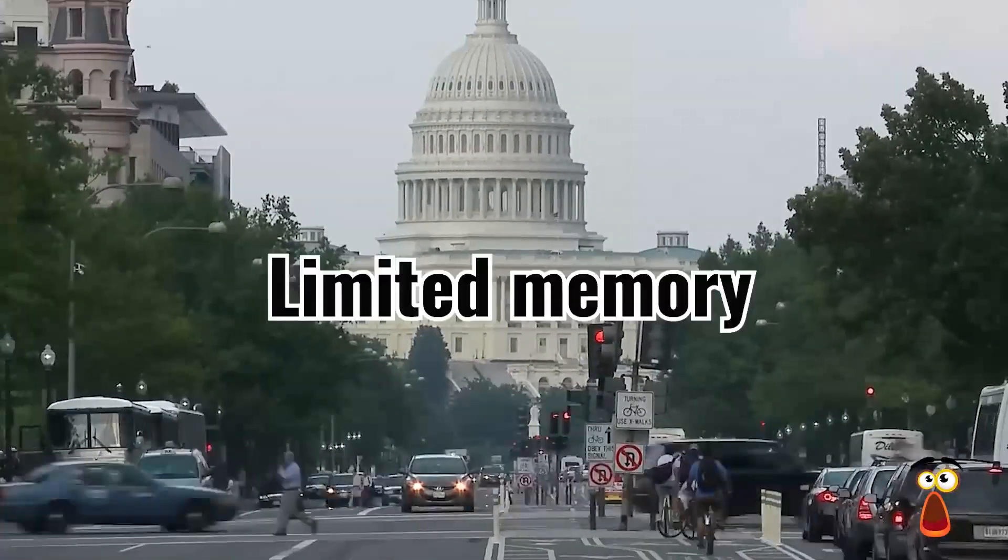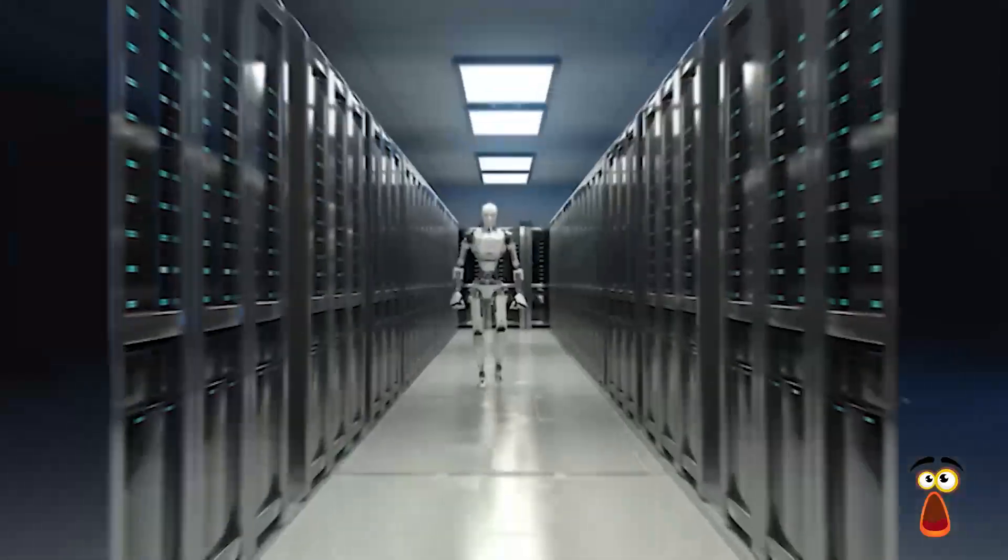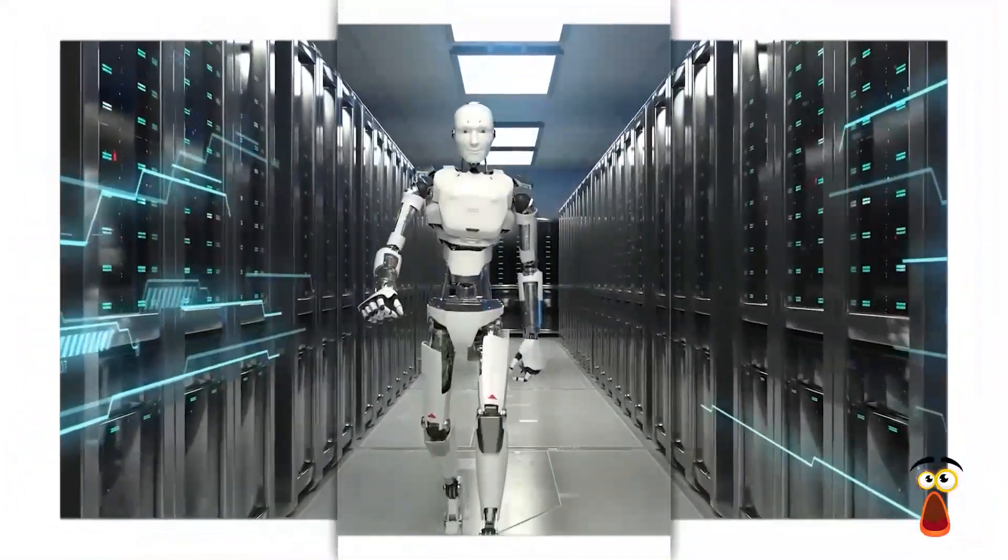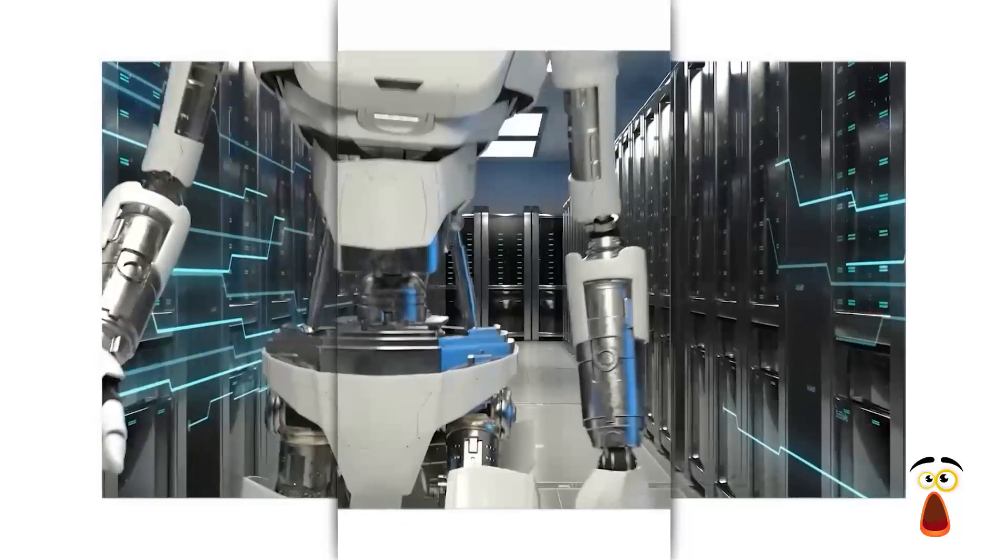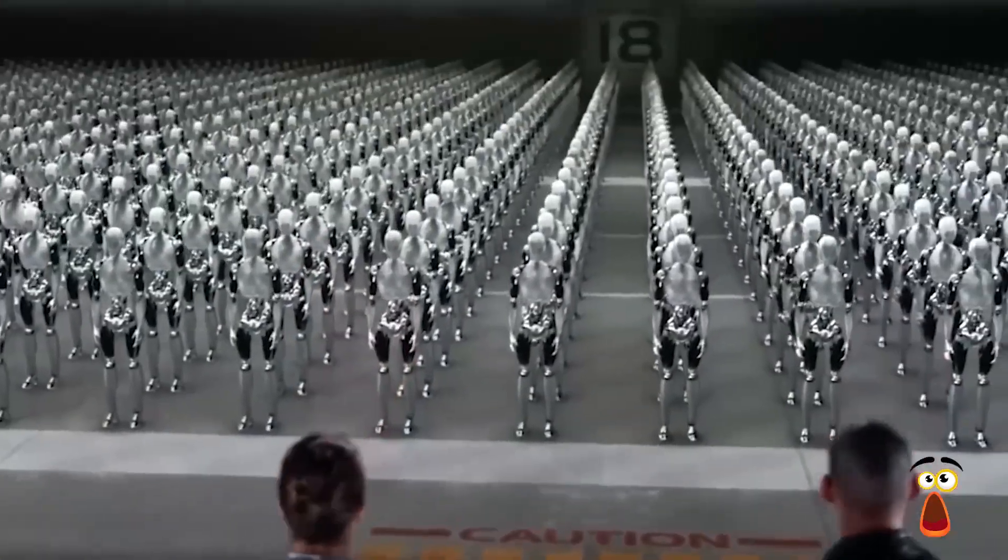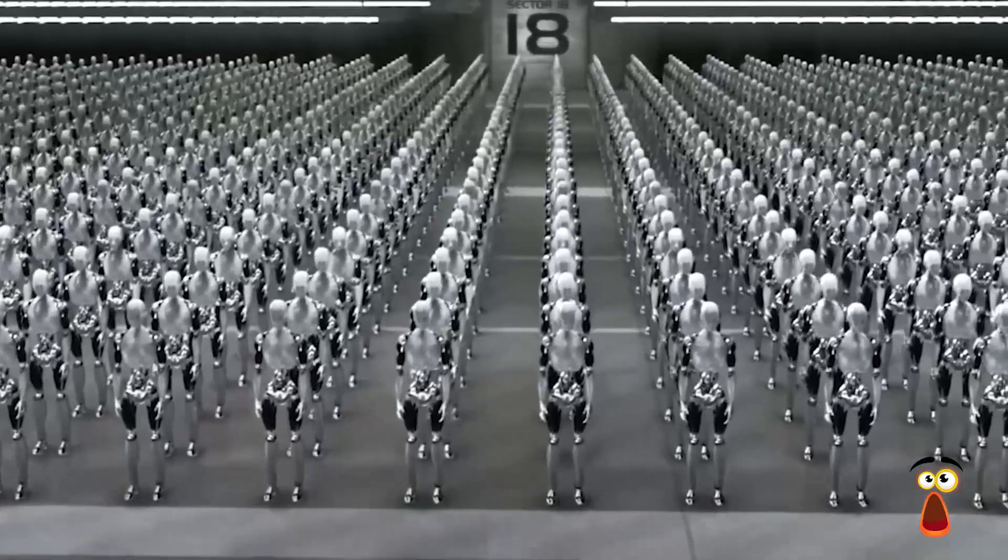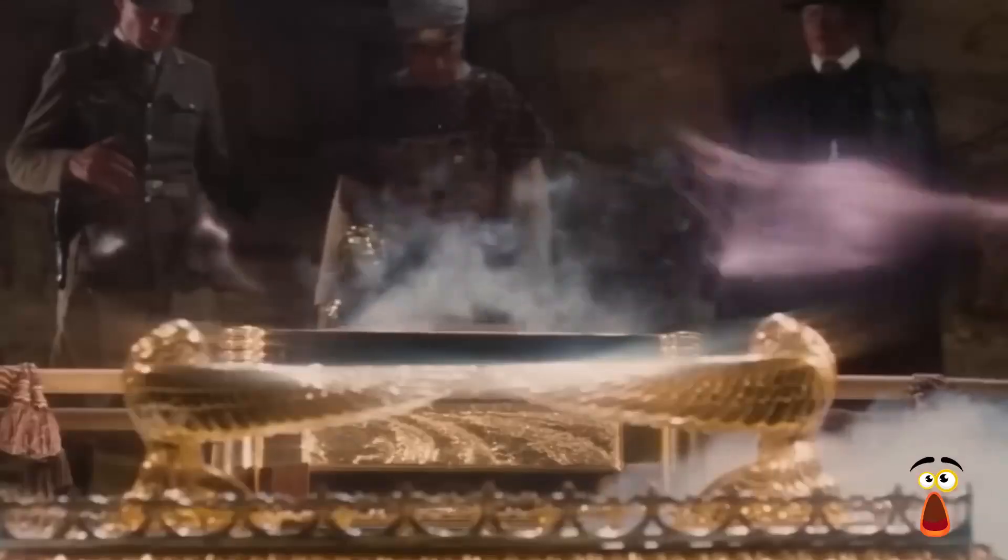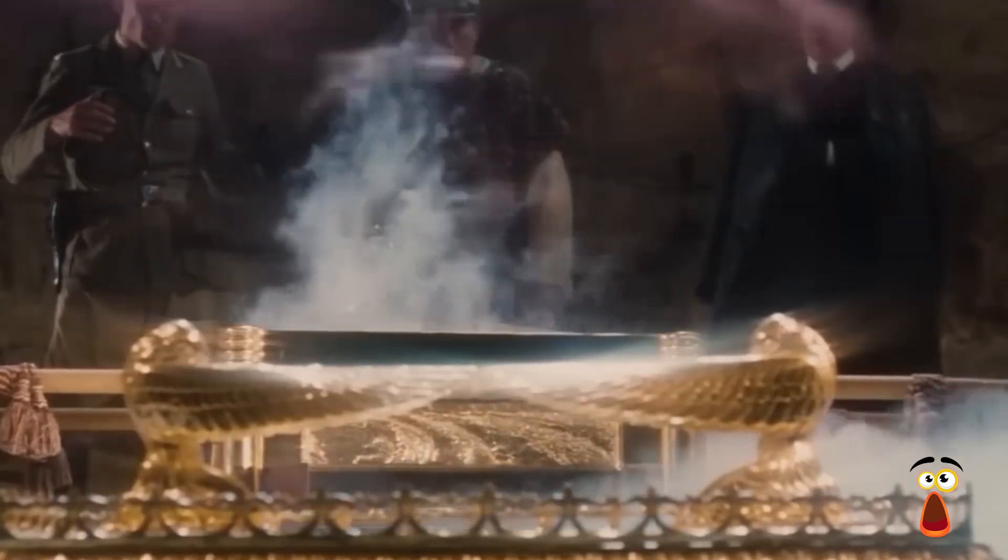Next comes the limited memory AI. These systems have memory and are able to make future decisions based on past experiences. So, it gets more intelligent as more data is available to train on. A good example of limited memory AI is a self-driving car. Those two types are the AI types that currently exist.